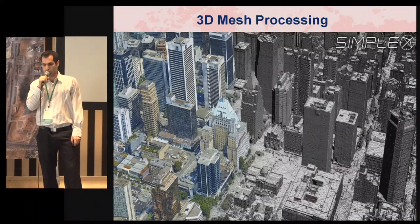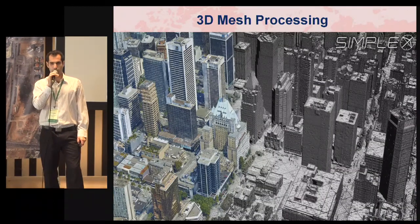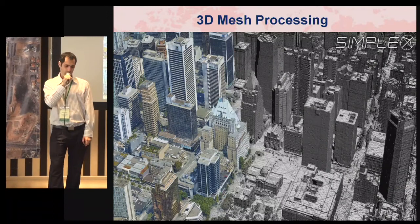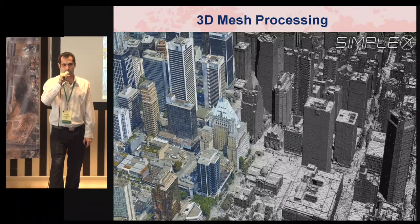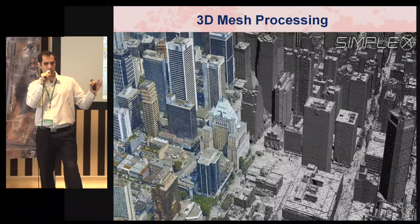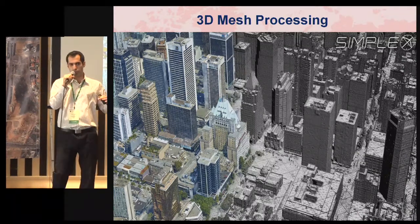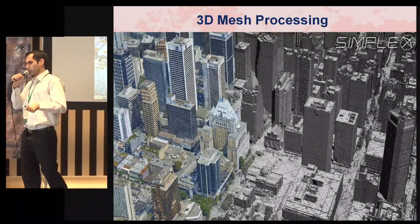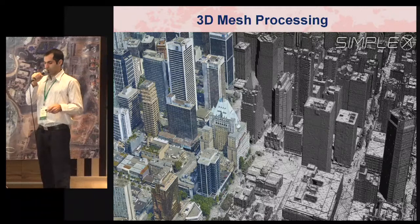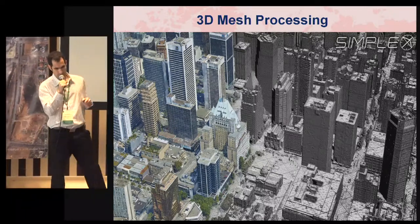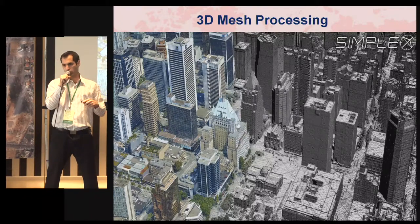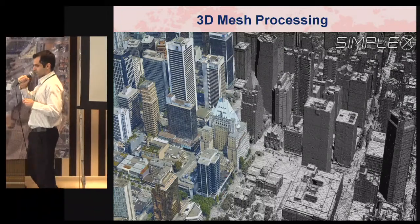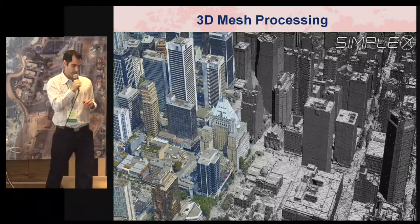3D mesh processing is a very important part of the production. One key thing we do differently: we don't use one software for the entire procedure. We do all the aerotriangulation work — matching and AT — using our own models, and only use software such as Bentley and Photomesh for the final DSM extraction and texturing. This has really helped us speed up processing rates and improve accuracies.